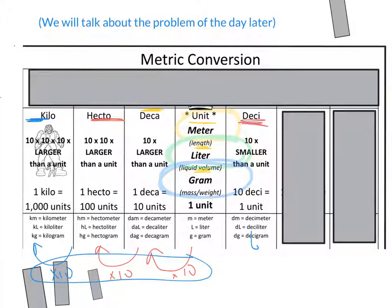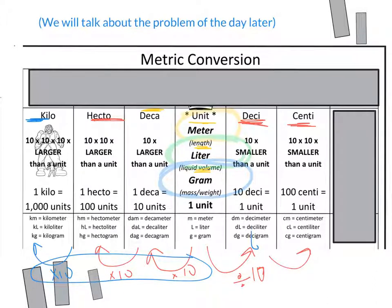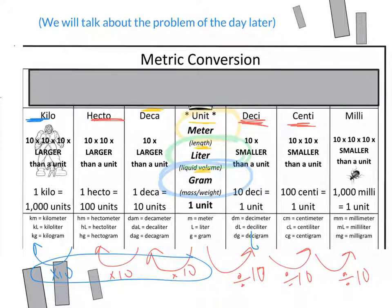Over here, we can see that a deci, that's another prefix, a decimeter would be 10 times smaller. So in order to get from a meter to a decimeter, I would need to divide by 10. And finally, the last one is 10 times smaller than a centimeter, which means it's how many times smaller than a regular meter? 1,000. You already know this prefix. What is it? Milli. Very good.